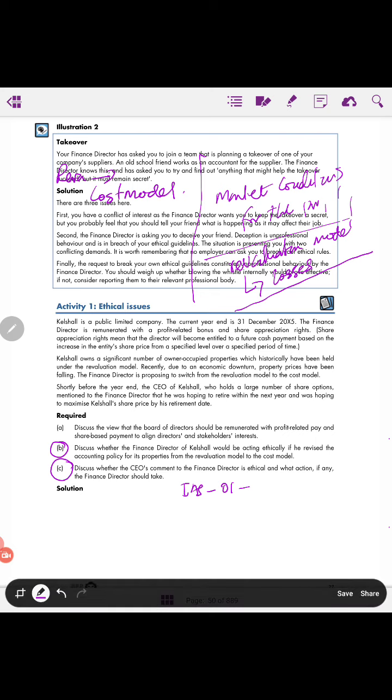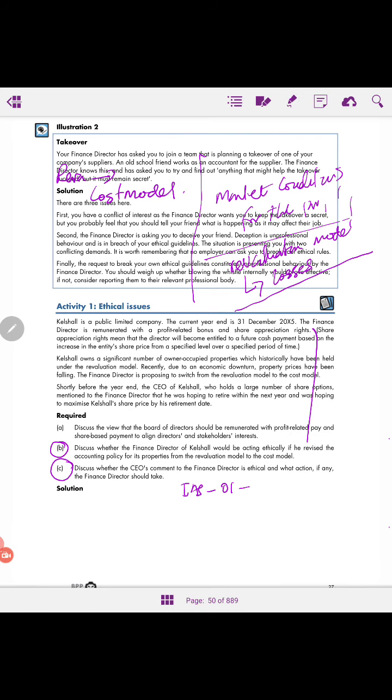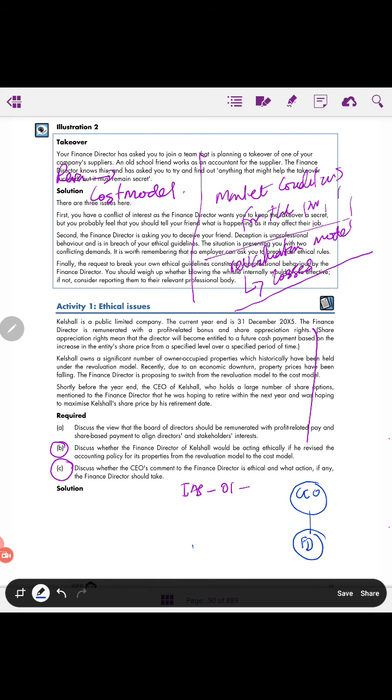Let's read part C. Discuss whether CEO's comment to finance director is ethical and what action, if any, the finance director should take. Now you can understand that if I draw the organization chart, the CEO would be here and finance director here. The finance director is an employee or subordinate for CEO. Generally, the finance director will be under pressure to act according to the requirements of the CEO. Based on the scenario we have gone through, the CEO is holding share options and when he wants to retire from the company, he could materialize those share options, then transfer that to shares and sell them, and then he plans to make some cash benefits.